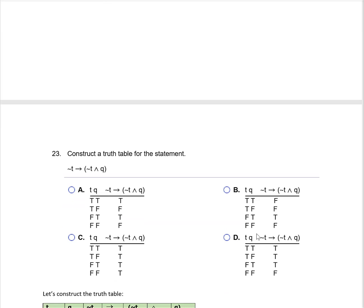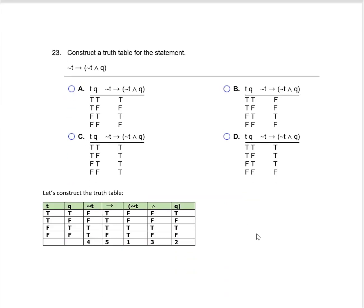The next problem also needs a truth table, and it's a conditional. I built the truth table and look at the last column, which is column five. Comparing to the answers, this matches answer choice D.